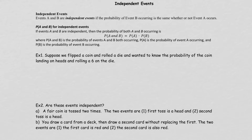Let's look at example one. Suppose we flip a coin and roll a die, and we want to know the probability of the coin landing on heads and rolling a 6 on the die. As you can see, you have two events happening: the coin lands on heads and rolling a 6 on a die. Because coin landing on heads is not going to be affected by rolling a 6 on the die, we call this an independent event.